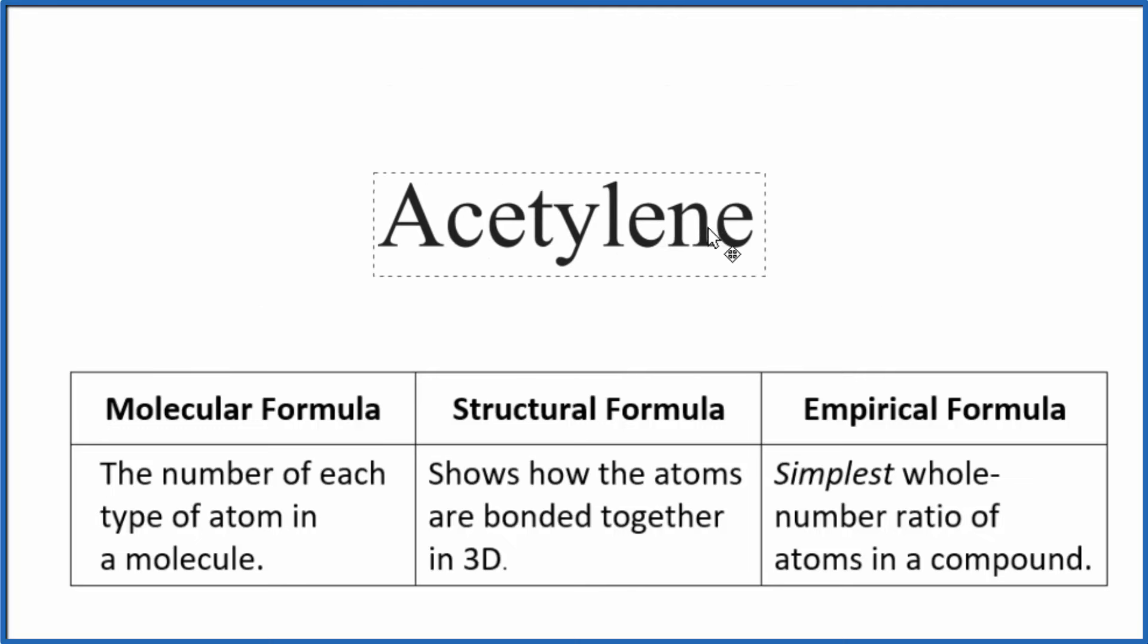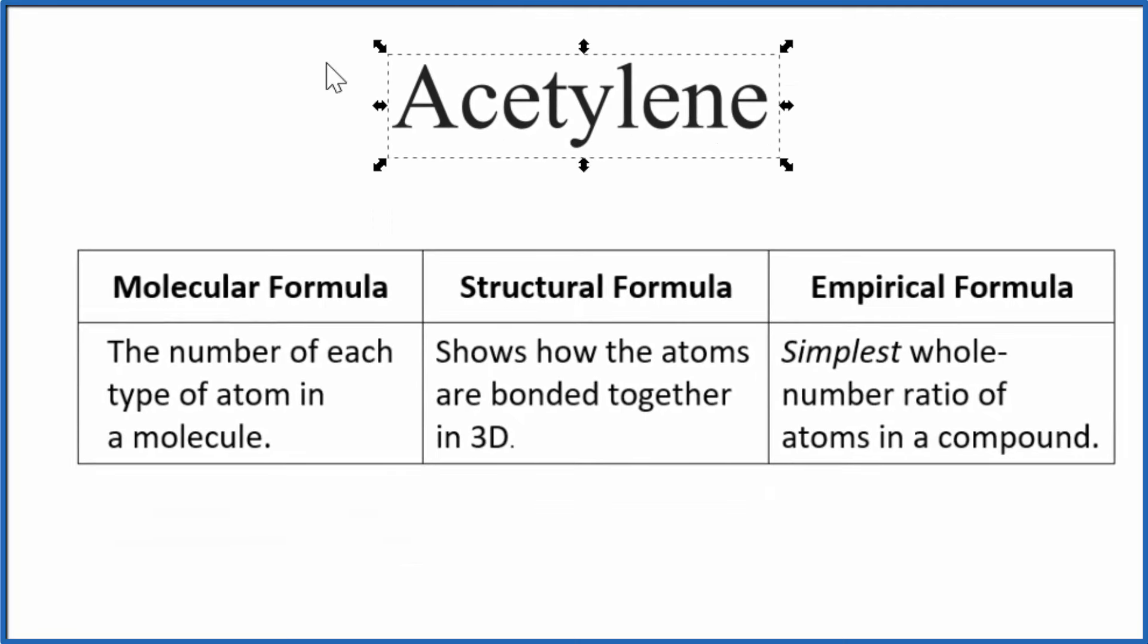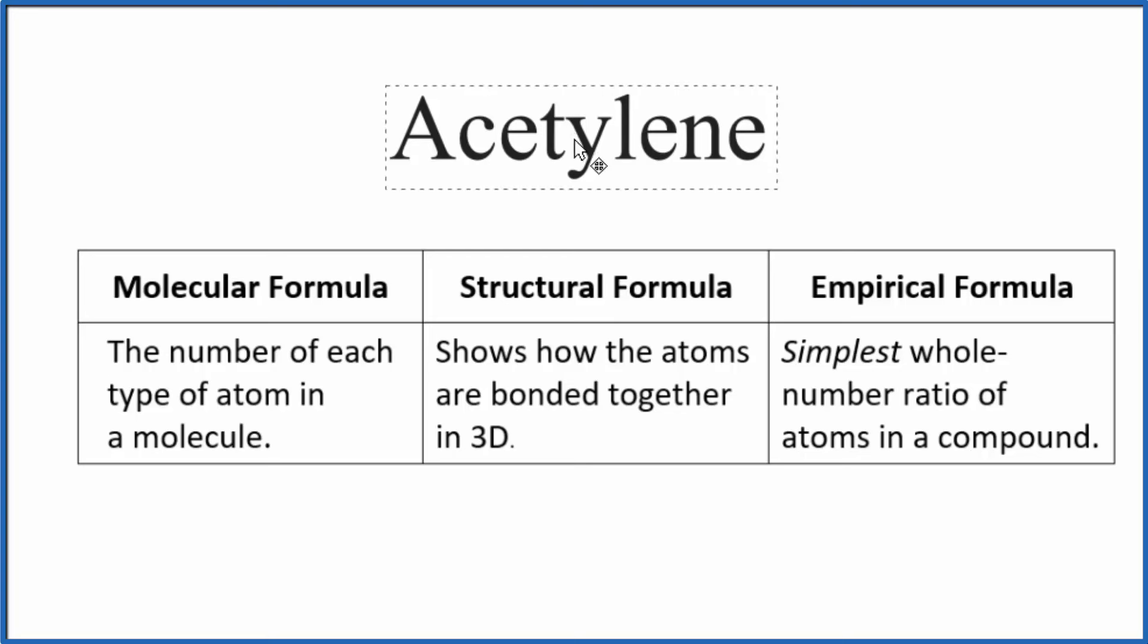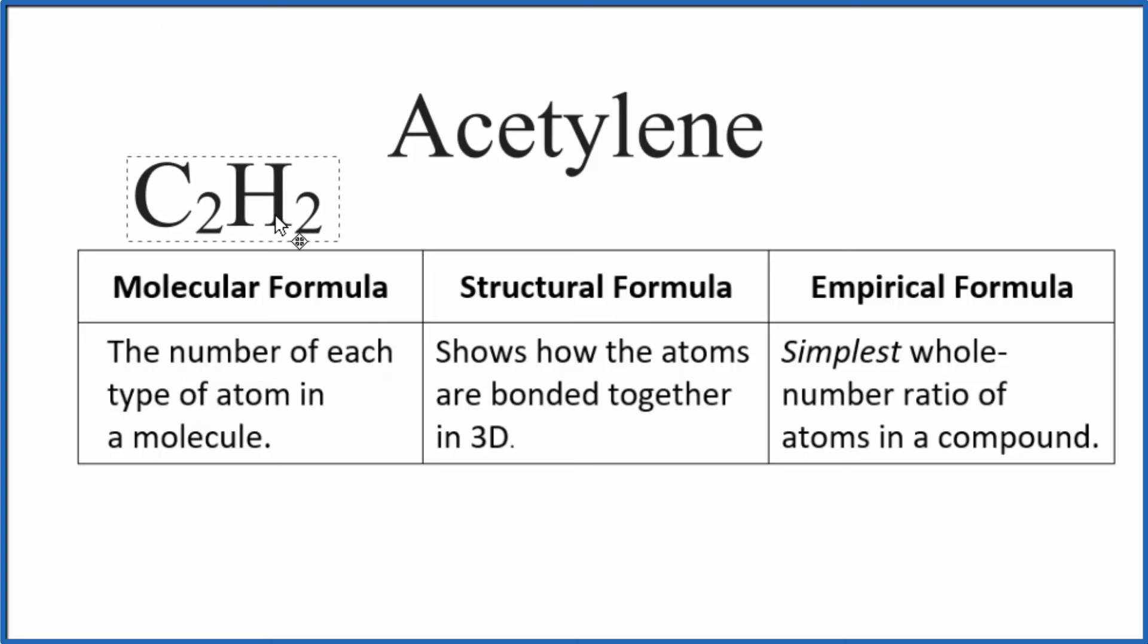The best way to learn is probably from examples. Let's start with acetylene, also called ethyne. The molecular formula tells us the number of each type of atom that's in the acetylene molecule. Here's acetylene and it's C2H2. If you have a molecule of acetylene, you've got two carbons and two hydrogens.